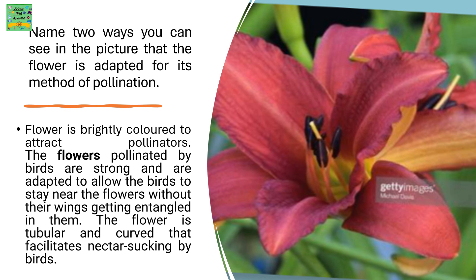Name two ways you can see in the picture that the flower is adapted for its method of pollination. This flower is brightly colored to attract the pollinators. Flowers pollinated by birds are strong and adapted to allow birds to stay near the flowers without their wings getting entangled in them. The flower is tubular and curved, which facilitates nectar stocking by birds.